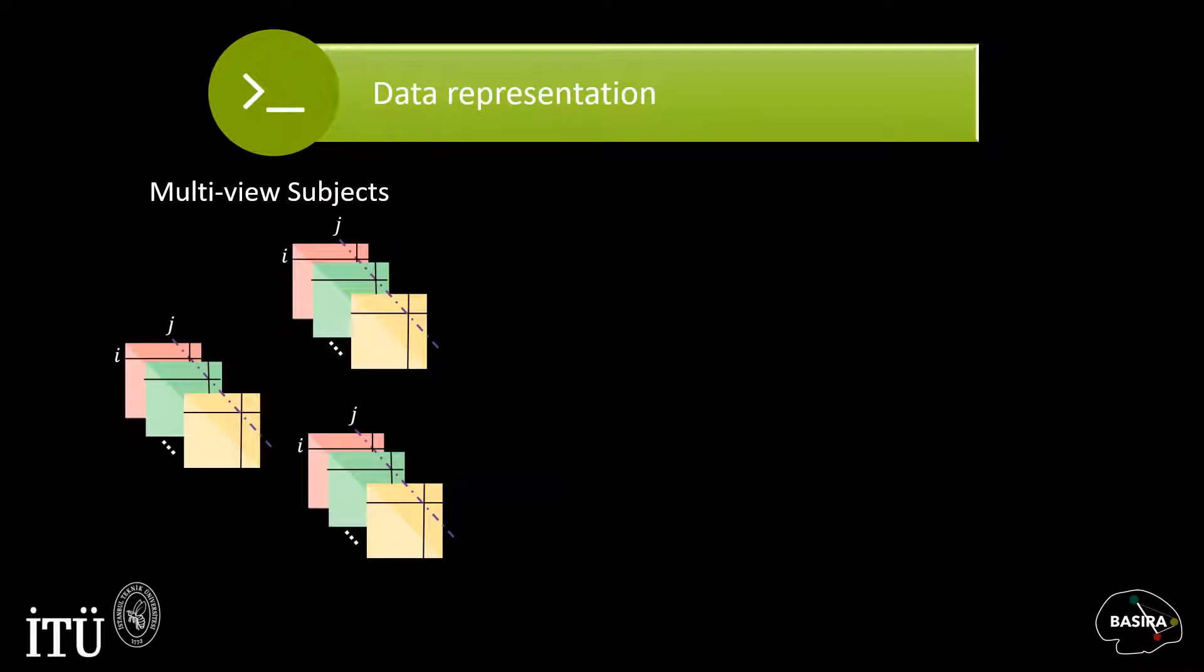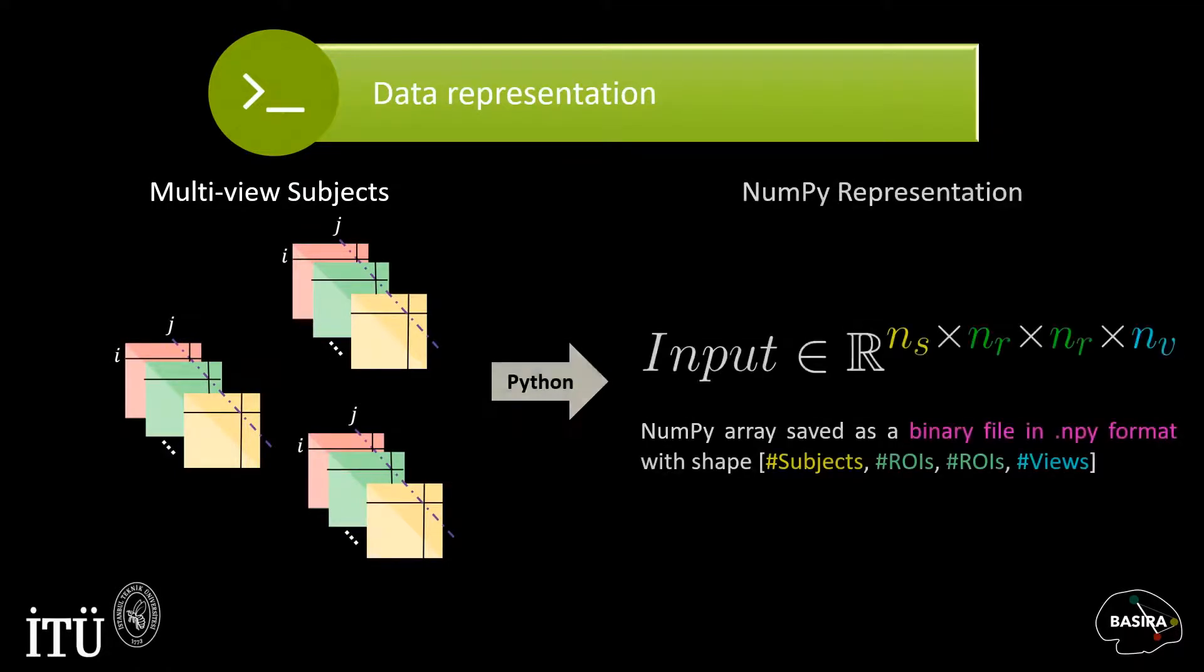We represent each multi-view brain network with a stack of adjacency matrices as shown. Therefore, our model expects you to represent the dataset with a 4-dimensional NumPy array, where the first dimension is the number of subjects. Second and third dimensions are the number of nodes in networks. In our case, nodes were anatomical regions of interest of brain networks. And the fourth is the number of network views for each subject.